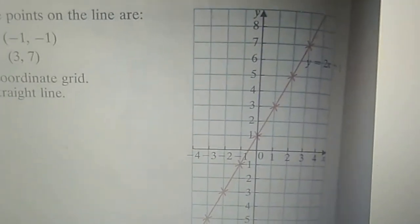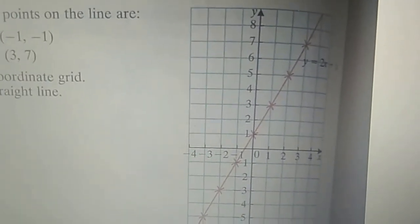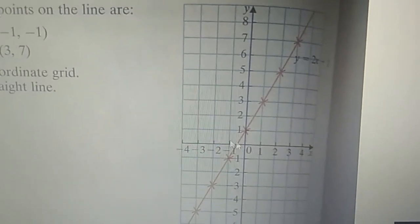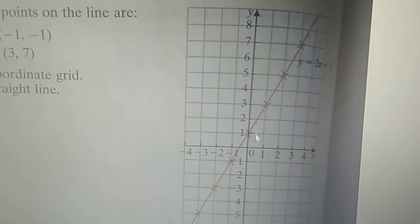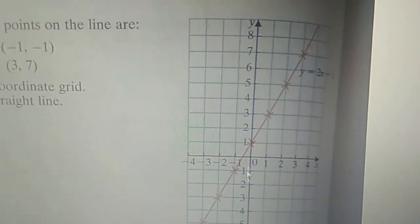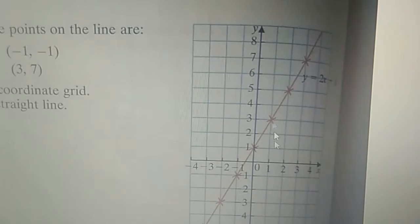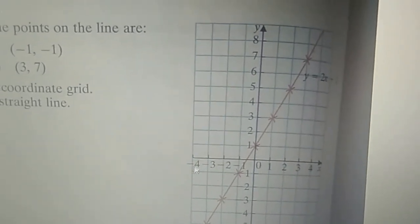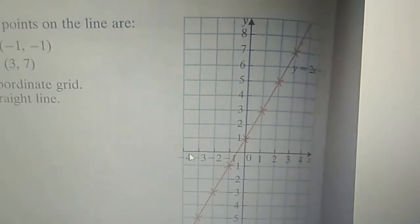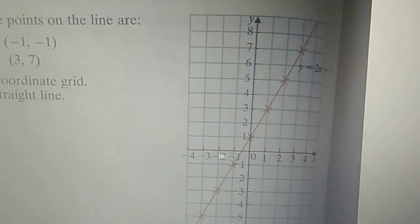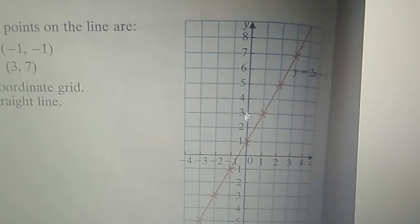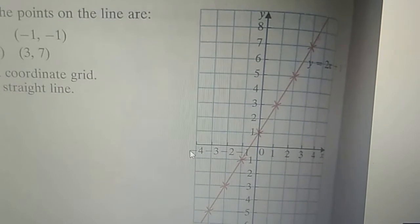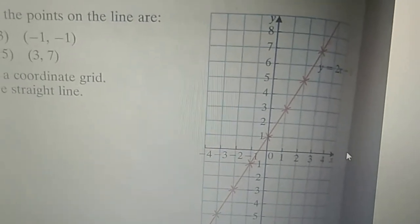A graph has got two main parts — two main axes. One is the x-axis and the other one is the y-axis. This vertical axis is the y-axis and this horizontal axis is the x-axis.